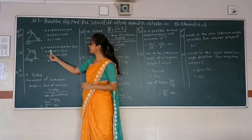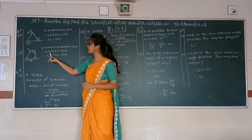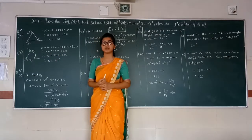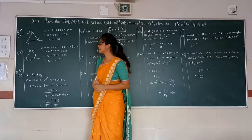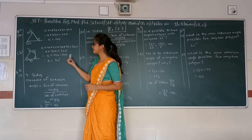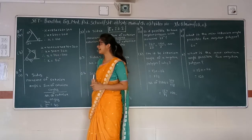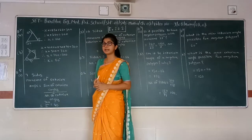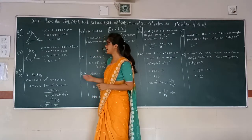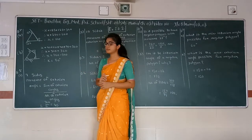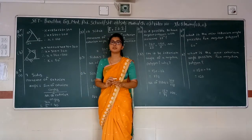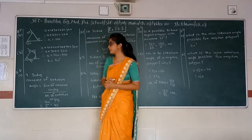Therefore, x plus 310 is equal to 360. Transferring 310 to the right hand side, we get 360 minus 310. Therefore, the value of x will be 50.